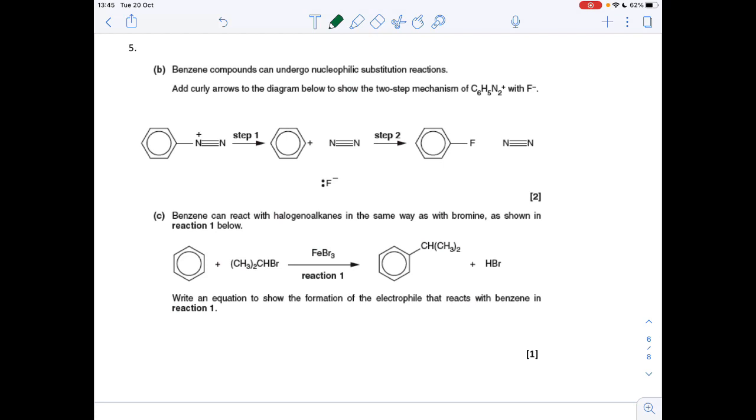Next question. Question 5. There's no part A by the way. I just didn't use part A from the paper I got this question from. So this is what we would call an unfamiliar mechanism. So obviously it's not on any specification this one. It's just thrown at you in the exam. And you've got to deal with it. So we've got to add curly arrows to the diagram. To show the two-step mechanism for this reaction.